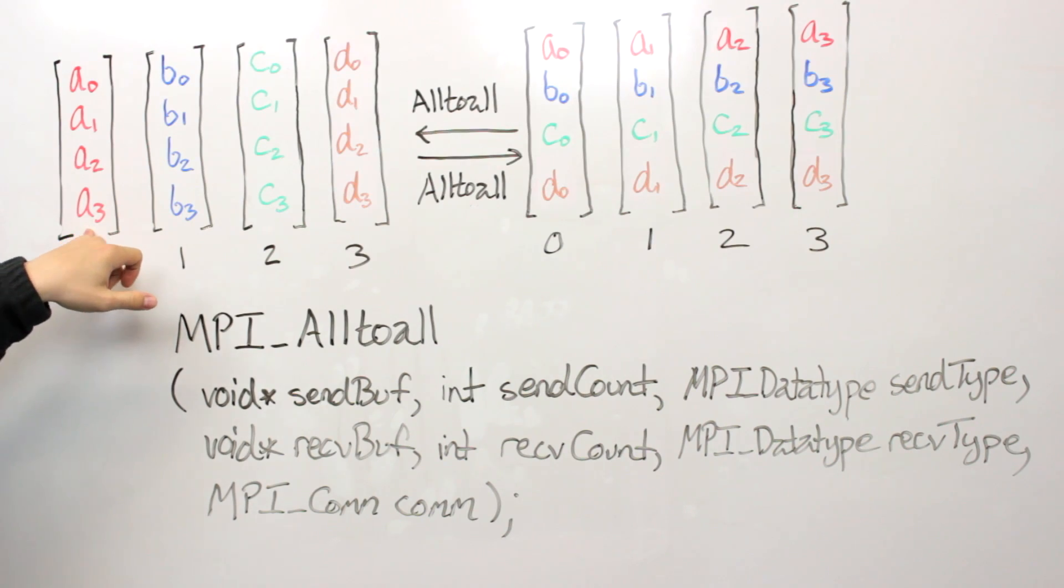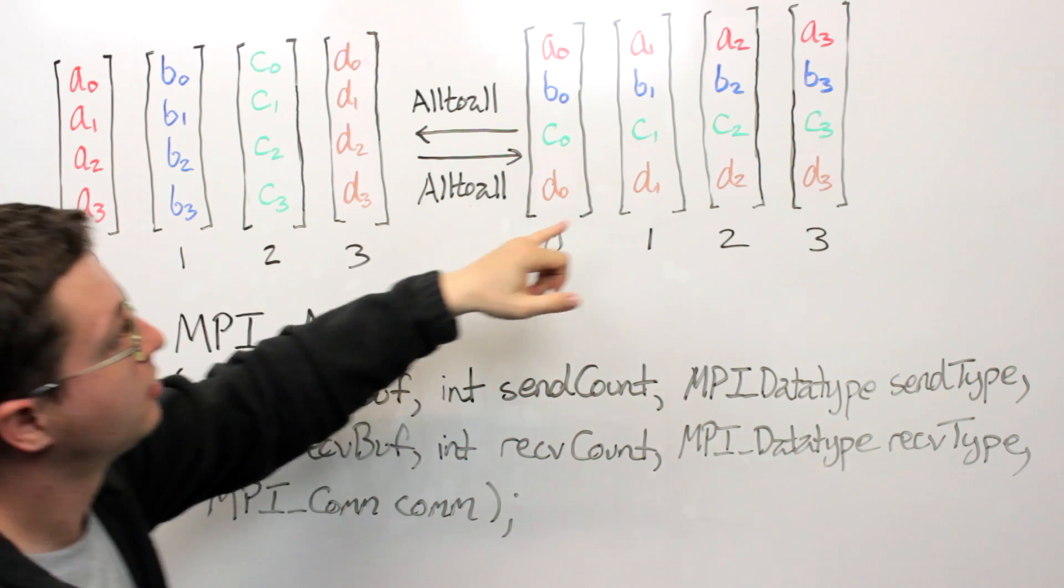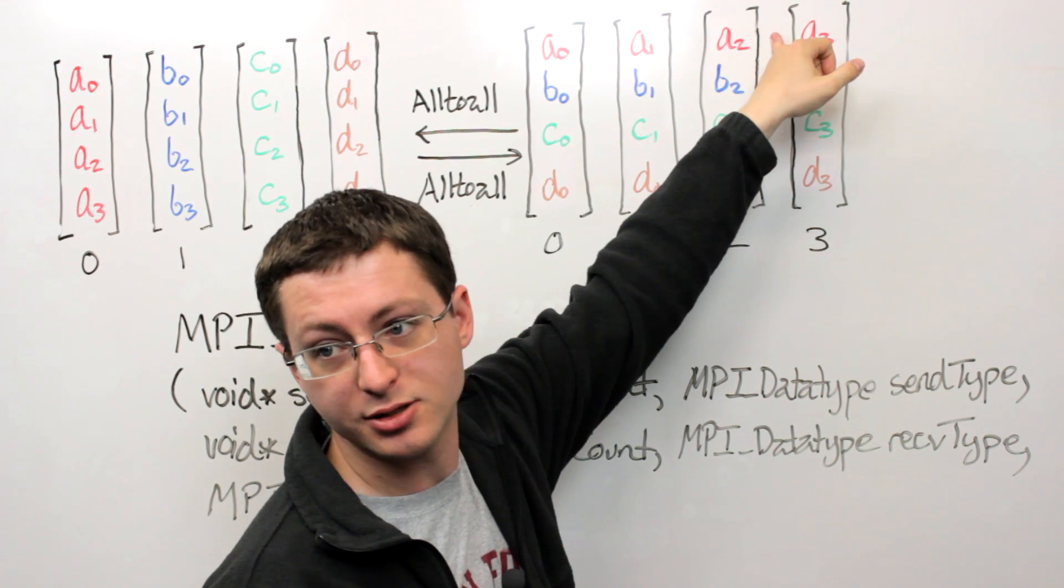A3 sits on process 0, and after MPI all-to-all, it's going to be in the zeroth portion of process 3's buffer.